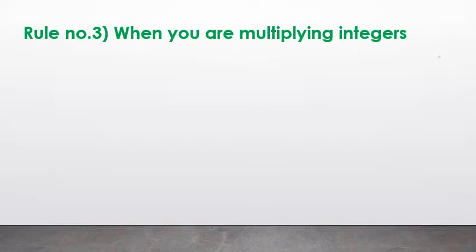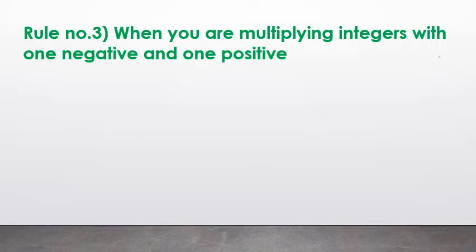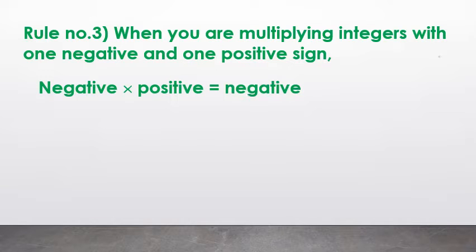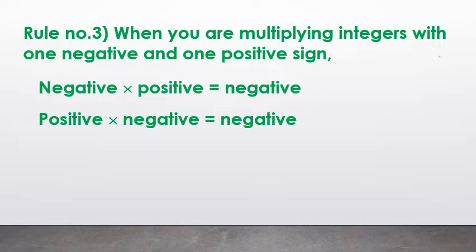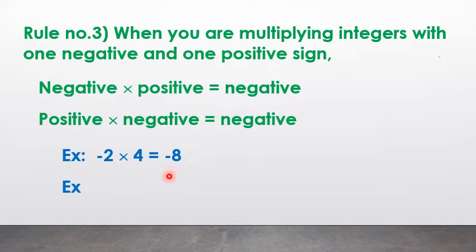The third rule: when you are multiplying integers with 1 negative and 1 positive sign, negative into positive is equal to negative, or positive into negative is equal to negative. For example, (−2) × 4 = −8. Another example: (−4) × 2 = −8.